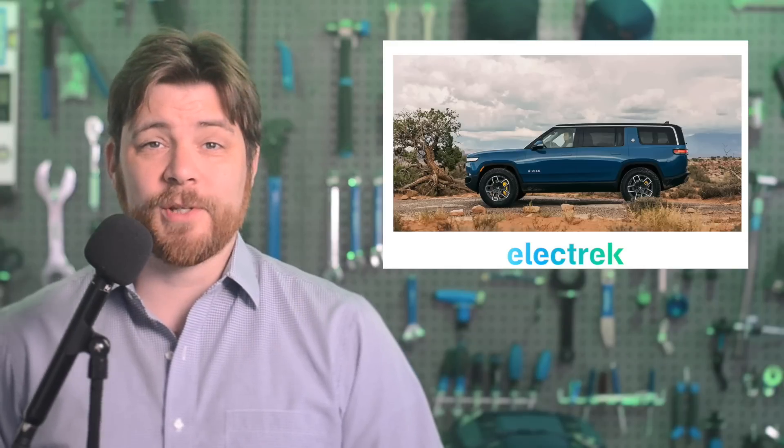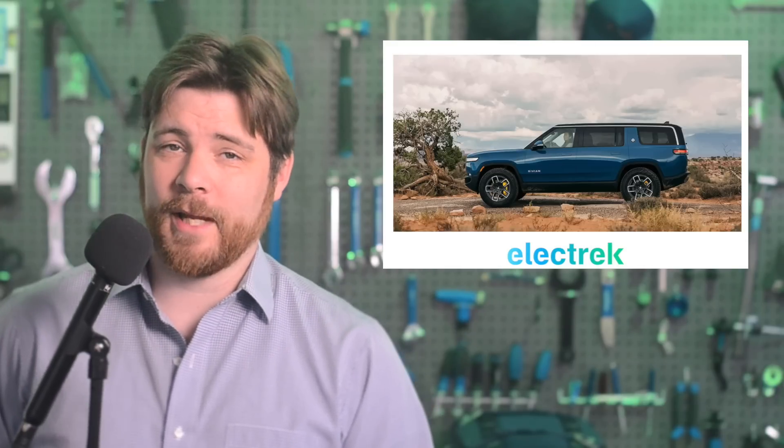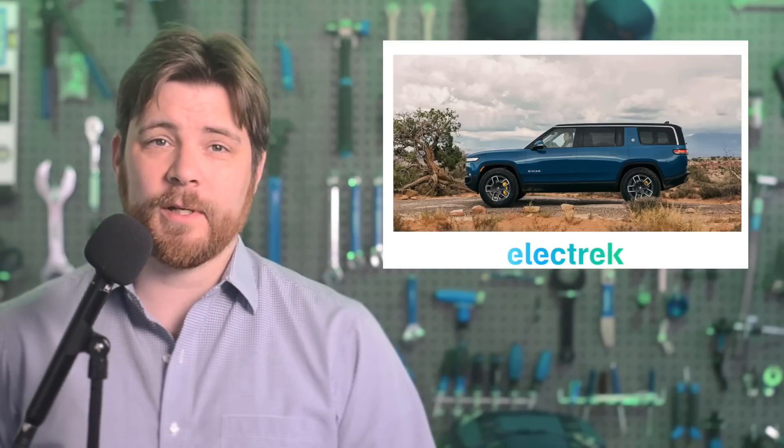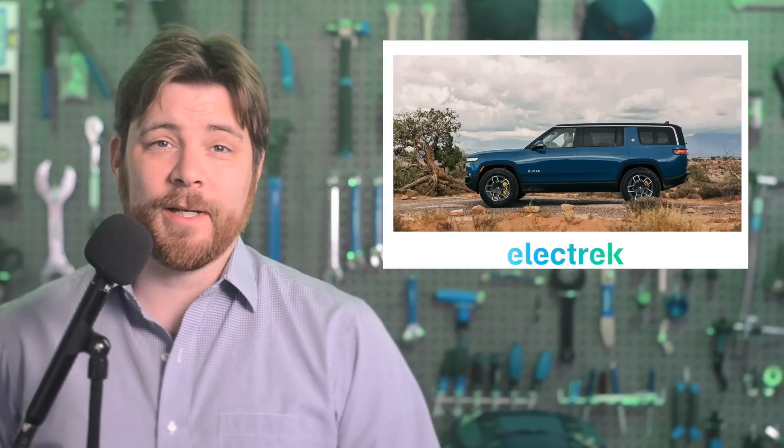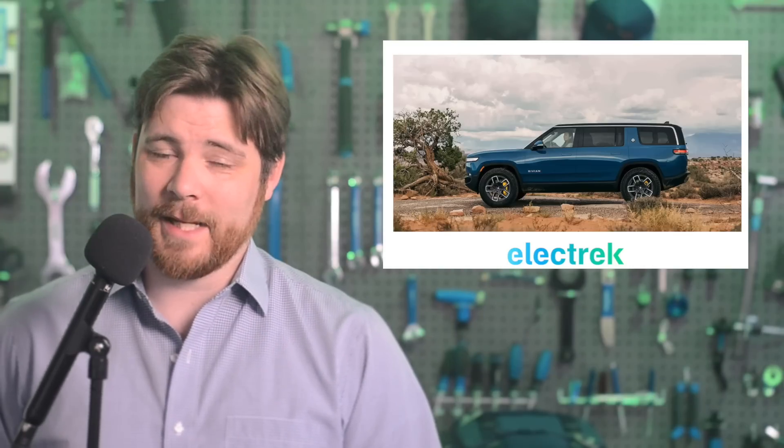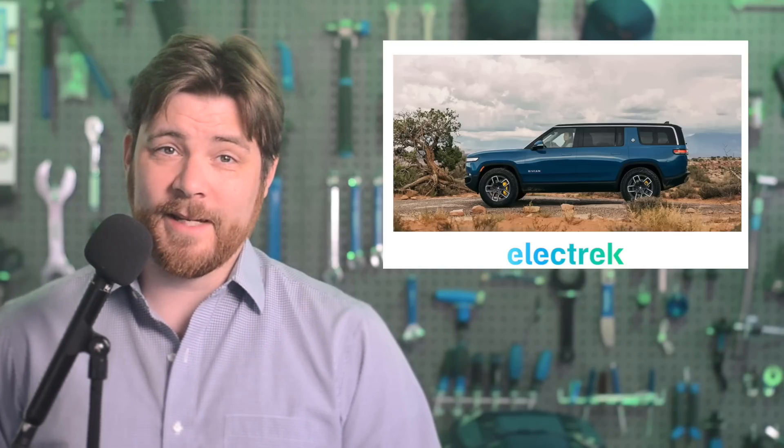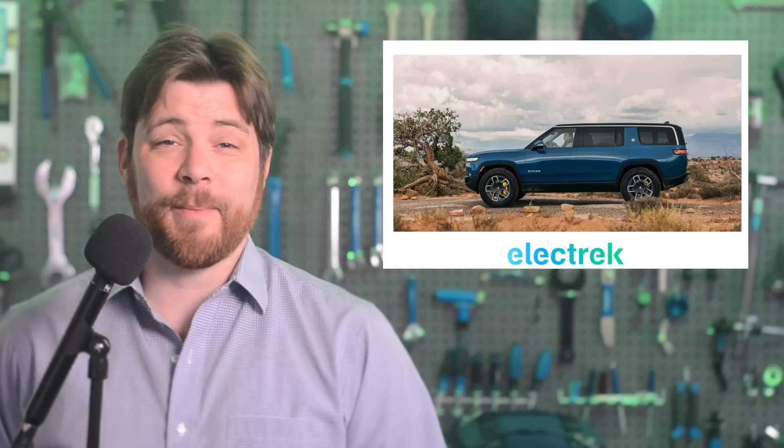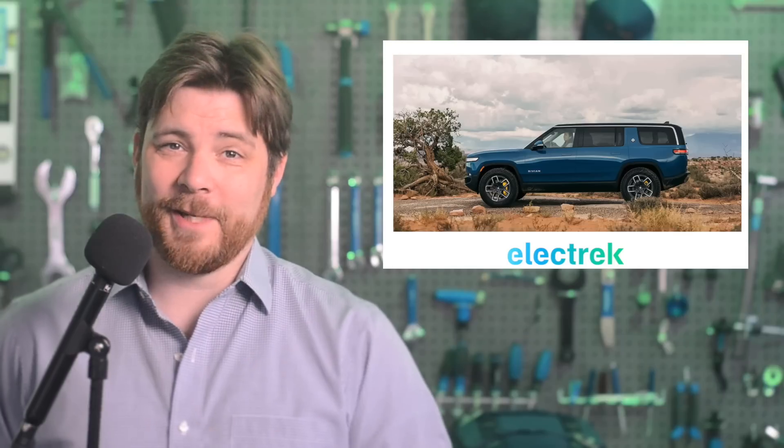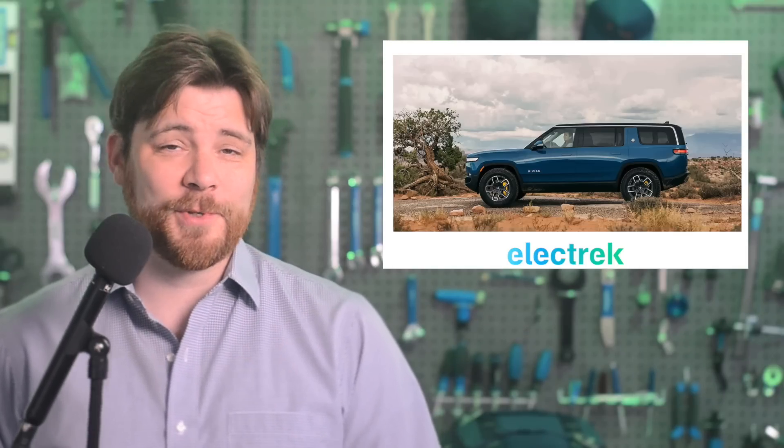Rivian is gearing up to accelerate production of its first electric SUV, the Rivian R1S. Rivian's CFO, Claire McDonough, explains during an interview with Deutsche Bank that the company is seeing strong demand despite the economic environment. Rivian is seeing higher demand for the R1S with about 70% of the company's pre-orders, so the company is beginning to prioritize production to resolve the imbalance.